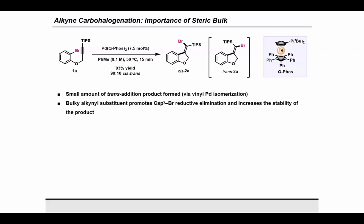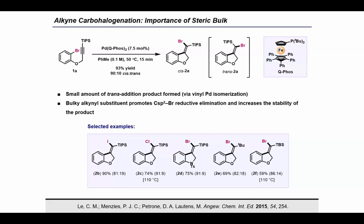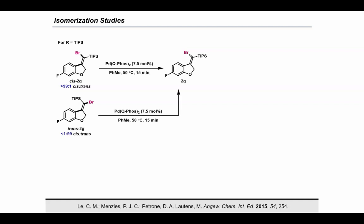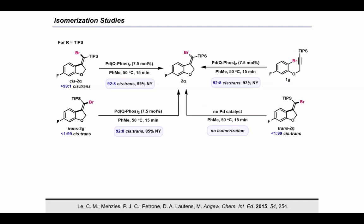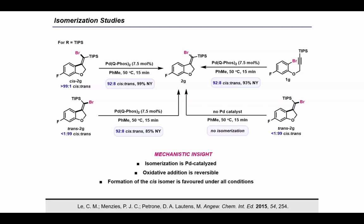Here are some selected examples from the substrate scope, which shows that both aryl iodides and aryl chlorides can be applied in this chemistry. We can also change the nature of the alkyne tether and, in limited instances, the terminal alkyne substituent, provided that steric bulk is sufficiently maintained. To gain insight into the mechanism for olefin isomerization, we conducted some experiments where we subjected isomerically pure samples of the cis and trans products back to the reaction conditions. In both cases, a 92 to 8 cis-trans mixture was produced, which is consistent with the ratio observed when starting directly from the linear substrate. In the absence of the palladium catalyst, no isomerization is observed, which demonstrates that the isomerization is indeed palladium-catalyzed, and that oxidative addition is reversible in our system. Under all conditions, the cis isomer was the major product.